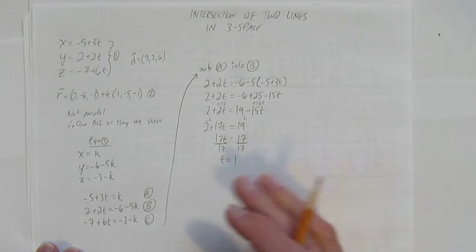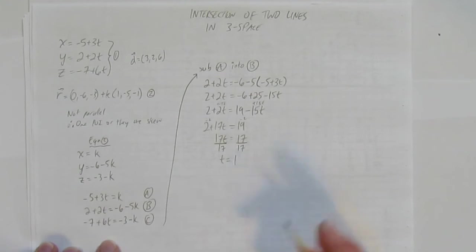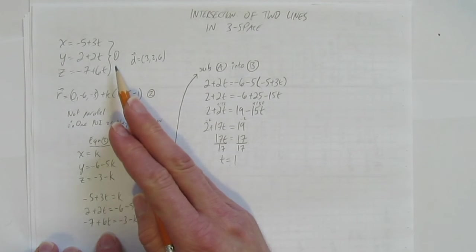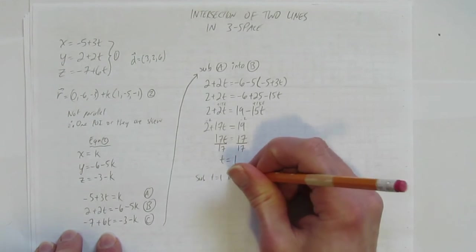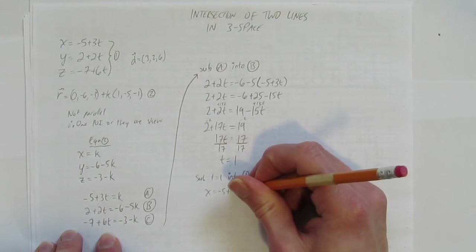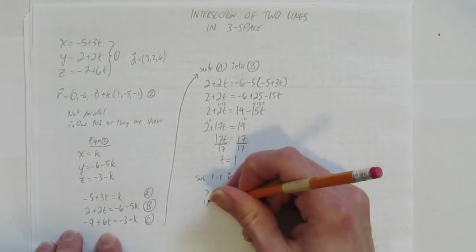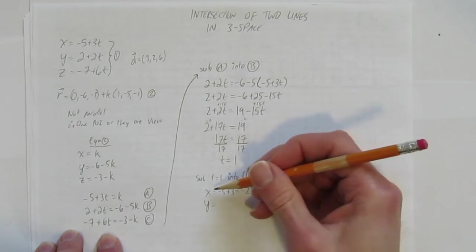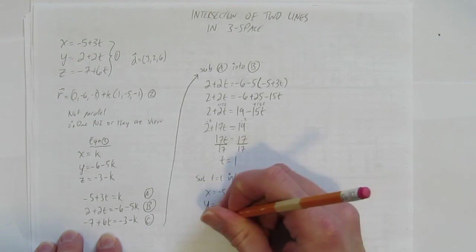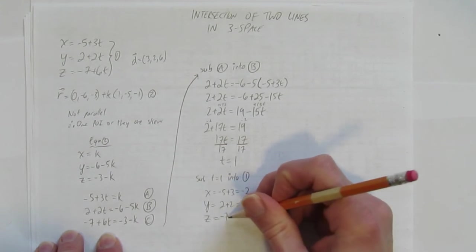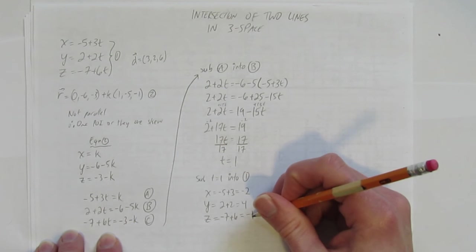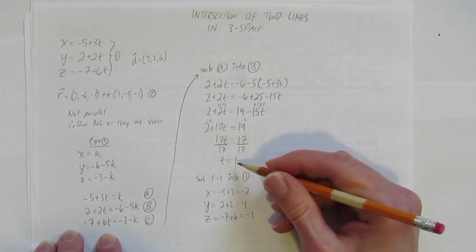But we haven't solved anything yet. We've just got a t that we think works. So let's see what it gives us. If we have t equals 1, we can go back to our equation 1 here. Let's sub t equals 1 into 1. And you get x equals negative 5 plus 3 times 1. That's negative 5 plus 3, which is just negative 2. And if you sub the t equals 1 into there, you get 2 plus 2 times 1, which 2 plus 2 is 4. And z is negative 7 plus 6 times t, which is negative 7 plus 6, which of course is negative 1. So we have an answer: negative 2, 4, negative 1.